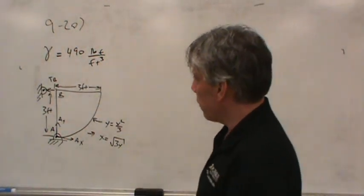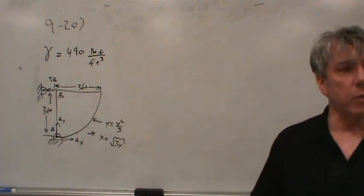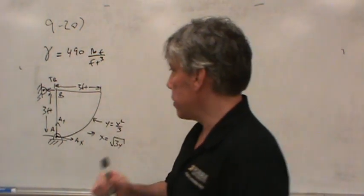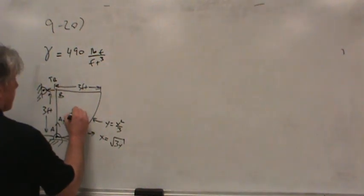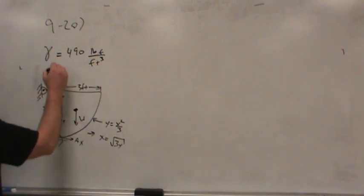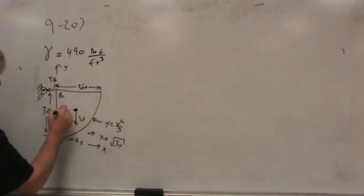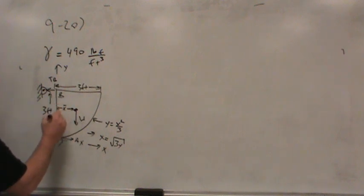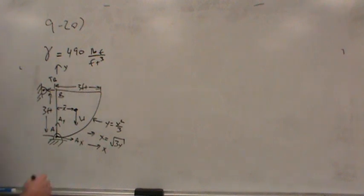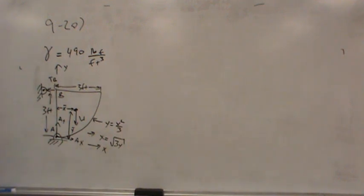There's one more force that belongs on this body that I haven't drawn — the weight. Where do I put the weight? At the centroid. Where is the centroid? That's the interesting question. I'll just pretend it's there for the time being. If I add a coordinate system, x-bar represents the distance from the y-axis over to the centroid, and y-bar is the height off the x-axis.